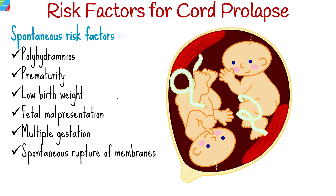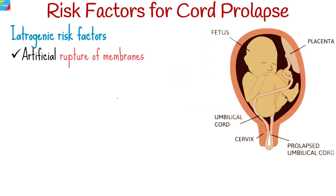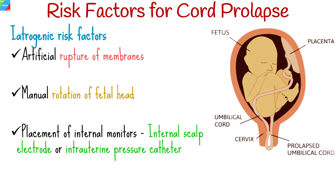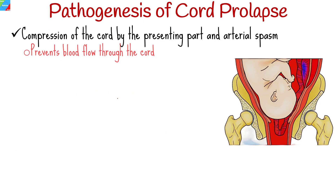Iatrogenic risk factors include artificial rupture of membranes, manual rotation of the fetal head, and placement of internal monitors such as an internal scalp electrode or intrauterine pressure catheter.